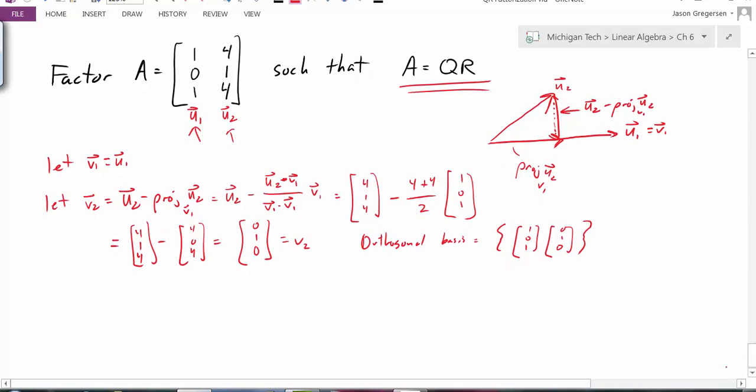But I'm not quite done yet. That's not exactly what I want. What I want is an orthonormal basis. So I have to normalize these two values. Well, the second vector is already normalized. The length of that thing is 1. But the length of this is not 1.